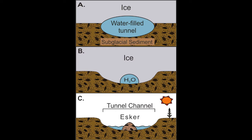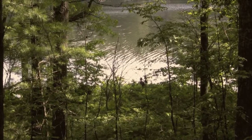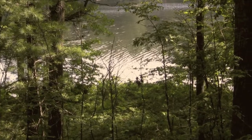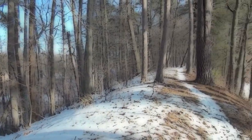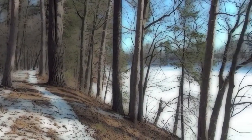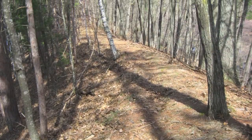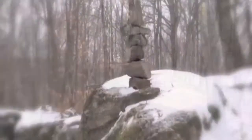Later, a much smaller meltwater stream transported sediment beneath the glacier. As stream velocity decreased, sand and gravel were deposited in the conduit, forming the esker. The swamp between the Moulin Kame and the esker marks the base of the tunnel channel.